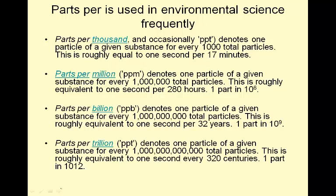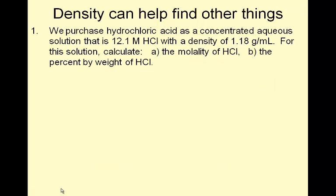Parts per thousand, and occasionally part PPT, denotes one particle of a given substance for every thousand total particles. This is equal to one second per 17 minutes. Parts per million, same deal. One part per million, that's one second every 280 hours. Parts per billion, that's a billion. So one second every 32 years. Parts per trillion, one particle for every trillion, obviously. One second every 320 centuries. These numbers matter. Parts per billion are how you count some things in water that are tolerated.